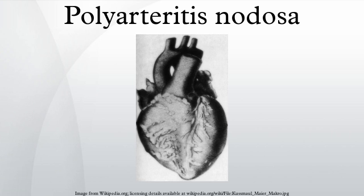A patient is said to have polyarteritis nodosa if he or she has three of the ten signs known as the 1990 American College of Rheumatology Criteria: weight loss greater than or equal to 4.5 kilograms, livedo reticularis, testicular pain or tenderness, muscle pain, weakness or leg tenderness, nerve disease, diastolic blood pressure greater than 90 mmHg, elevated kidney blood tests, hepatitis B or hepatitis C virus tests positive, arteriograms showing arteries that are dilated or constricted by the blood vessel inflammation, and biopsy of tissue showing arteritis — the sural nerve is a frequent location for the biopsy.